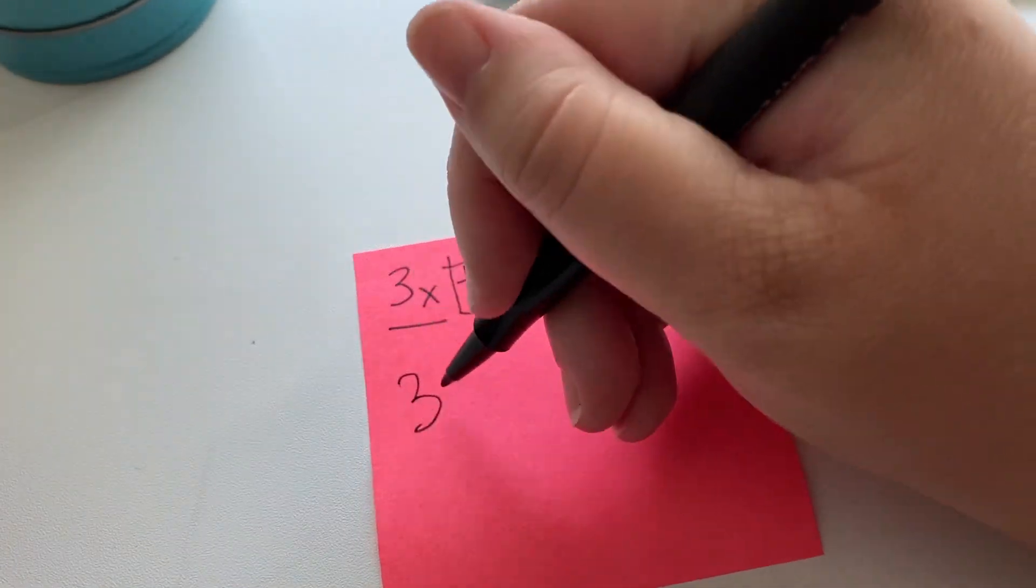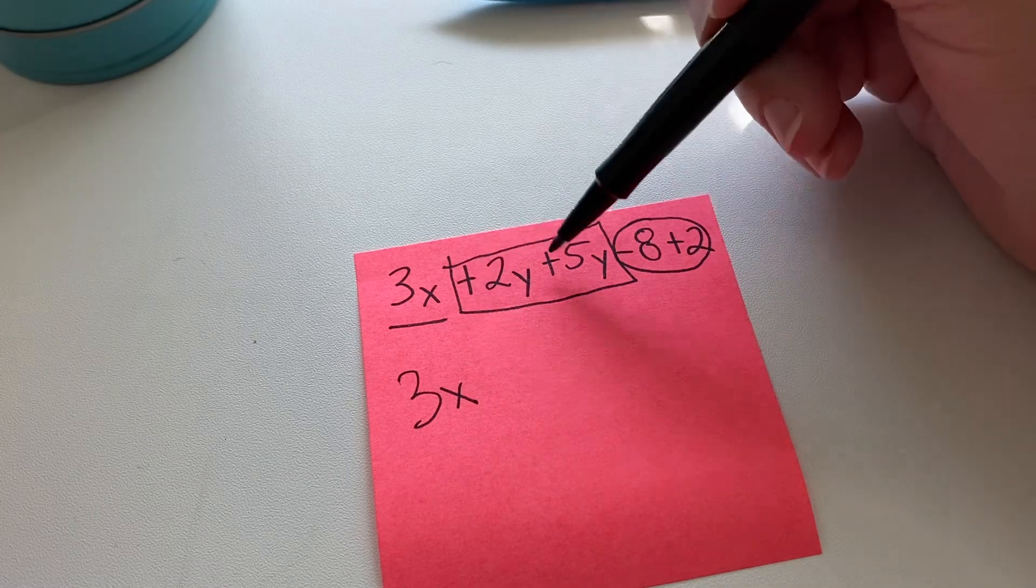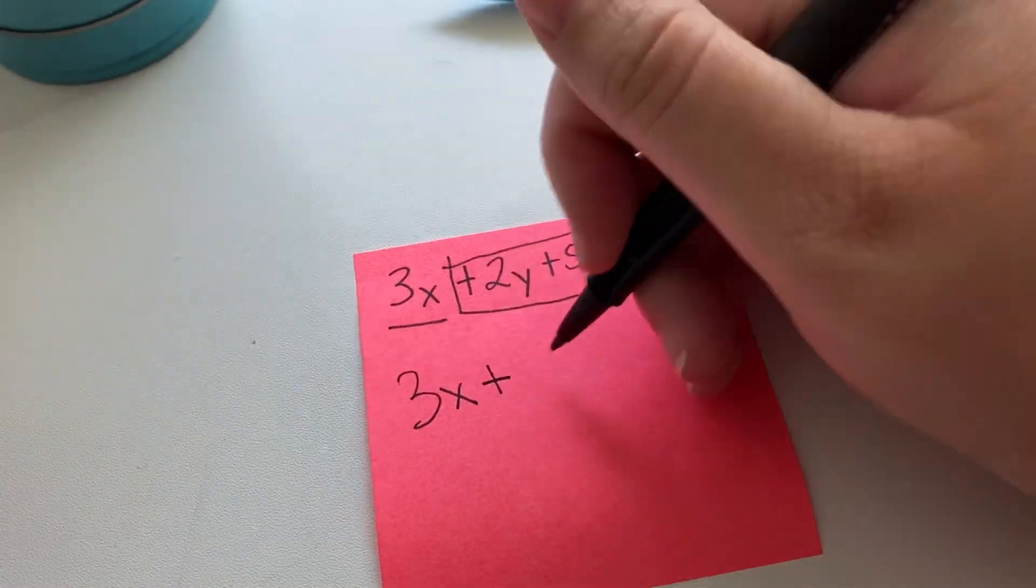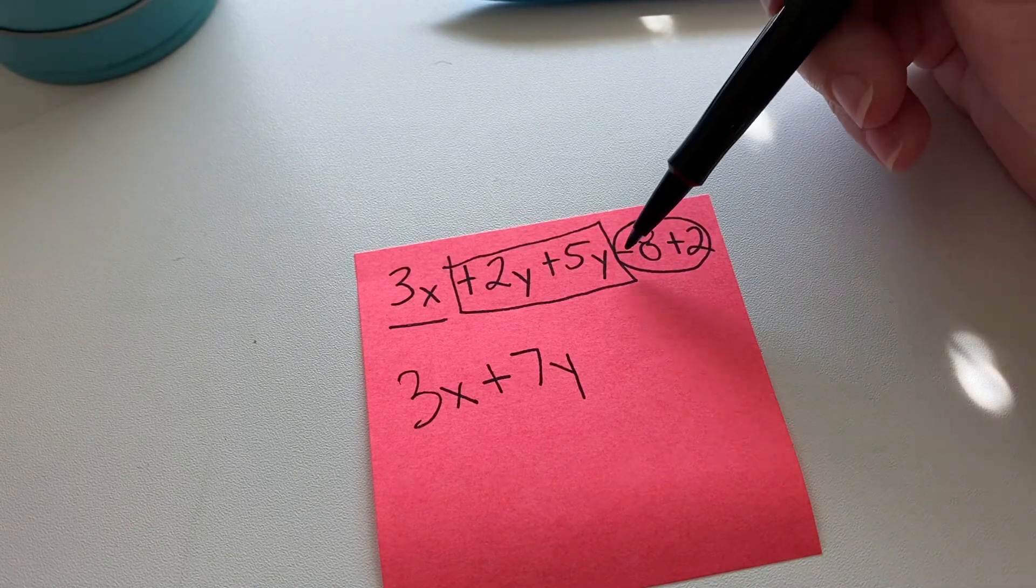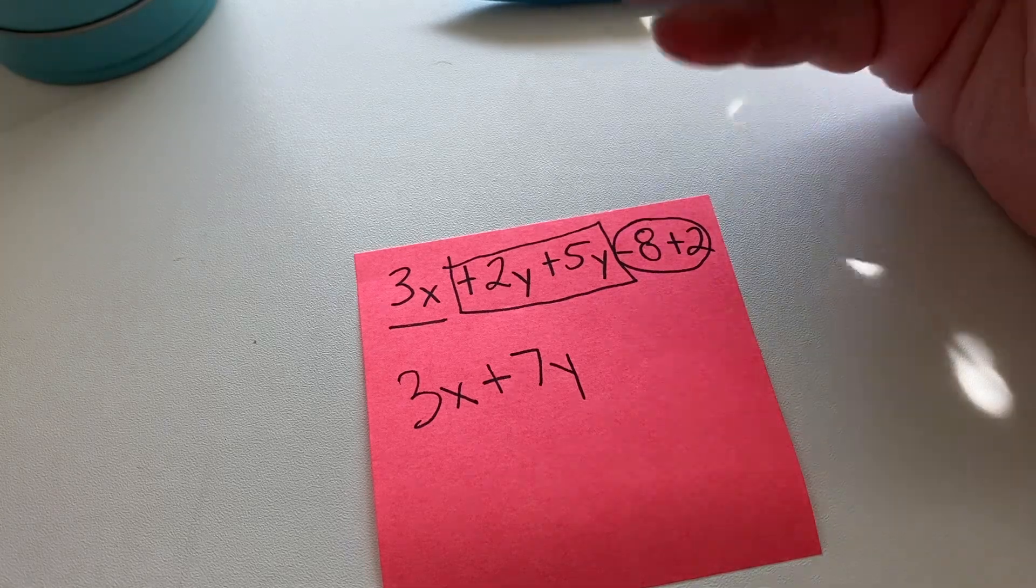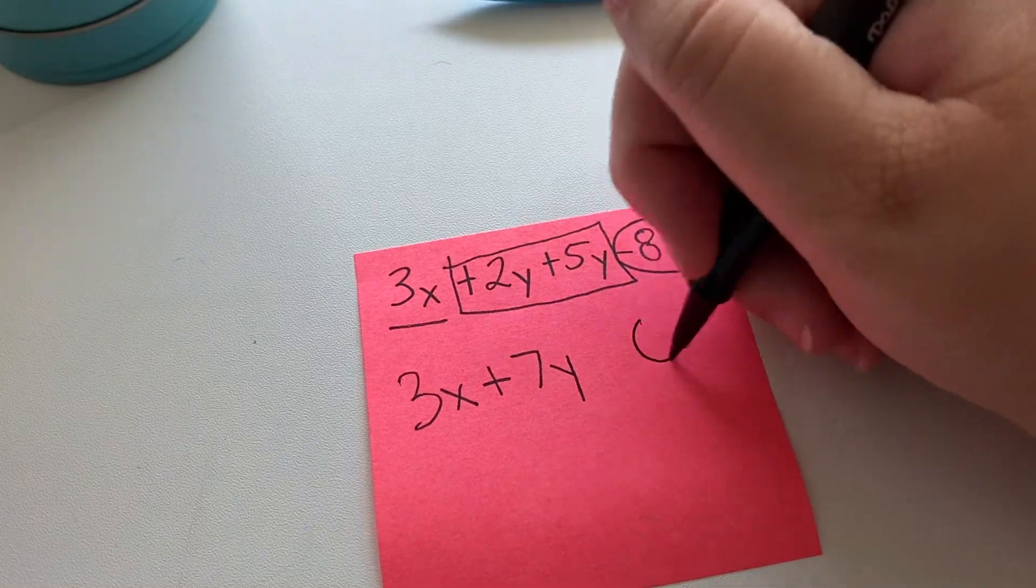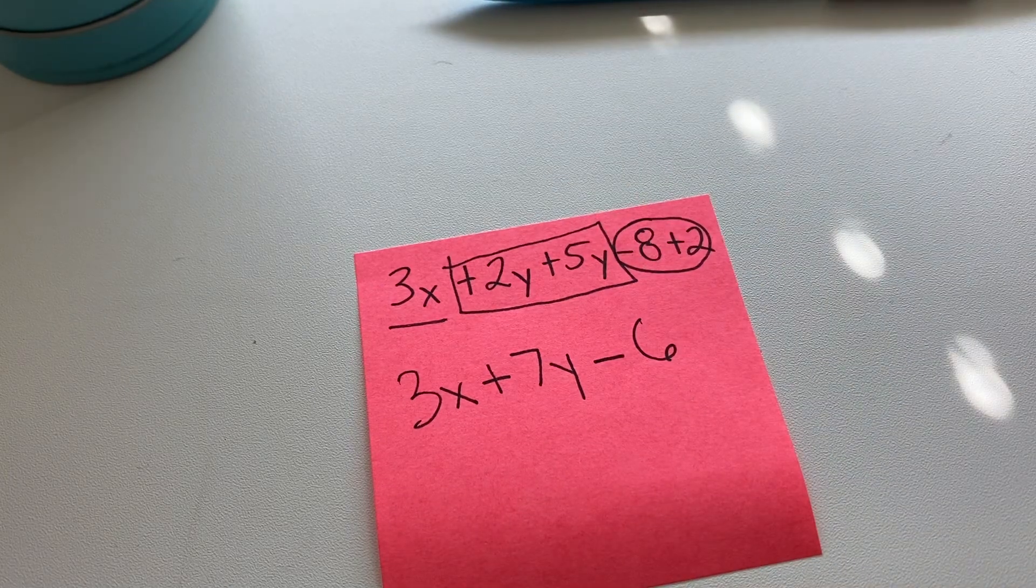There's nothing to add to the x, so we'll keep that as 3x. These are both positive, so that will be plus 7y. And then this one, you can see here we've got negative 8 plus 2. Different signs, subtract. The difference is 6, and keep the sign of the bigger digit. So it would be minus 6.